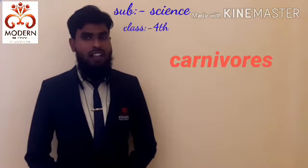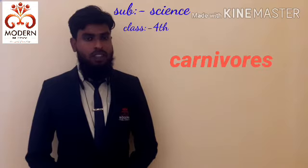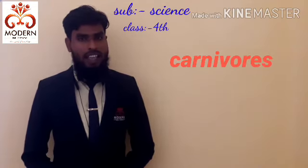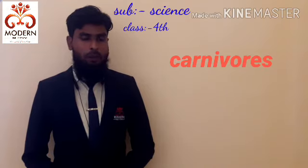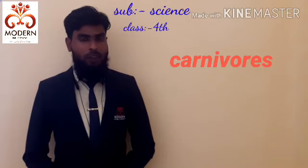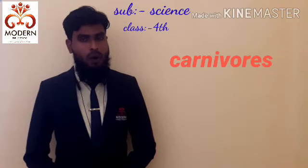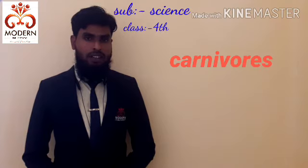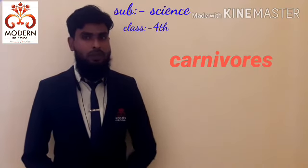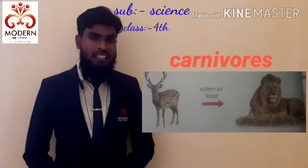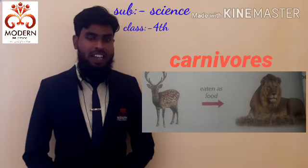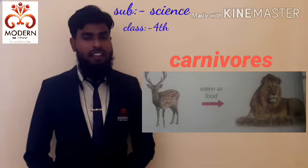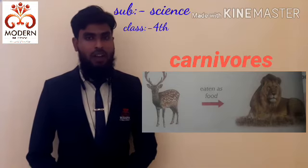The next word is carnivores. The spelling of carnivores is C-A-R-N-I-V-O-R-E-S. What is meant by carnivores? Carnivores means flesh-eating animal. Those animals that eat flesh are called carnivores.